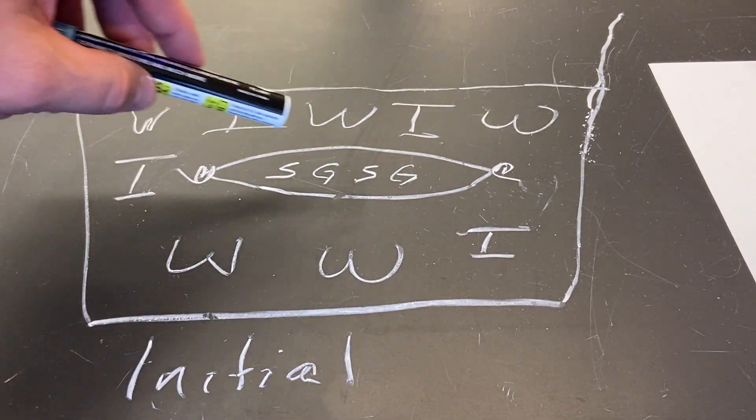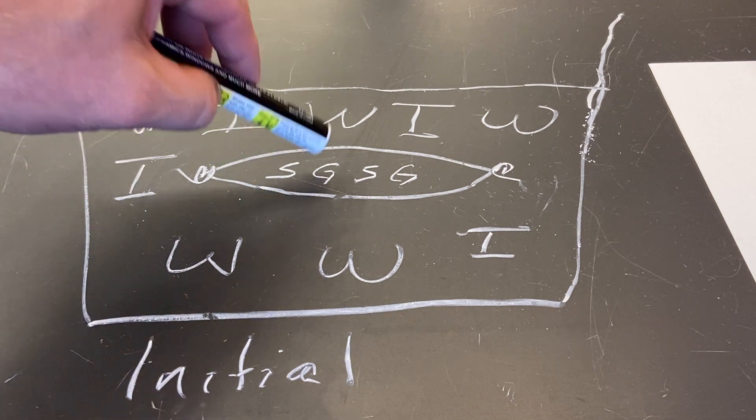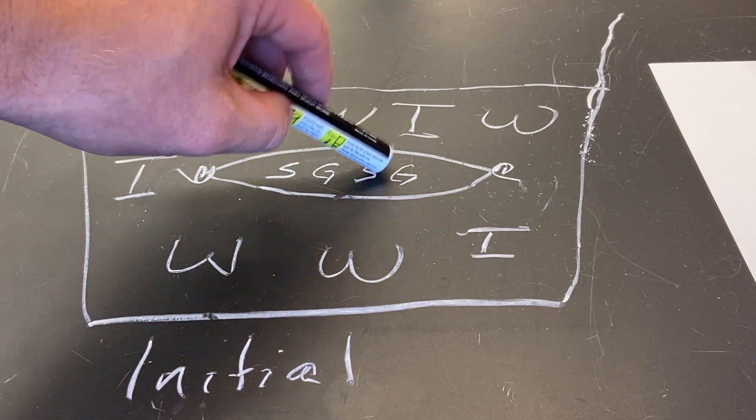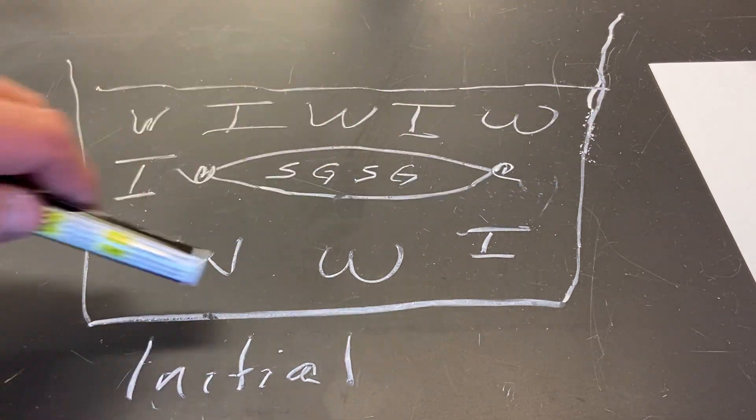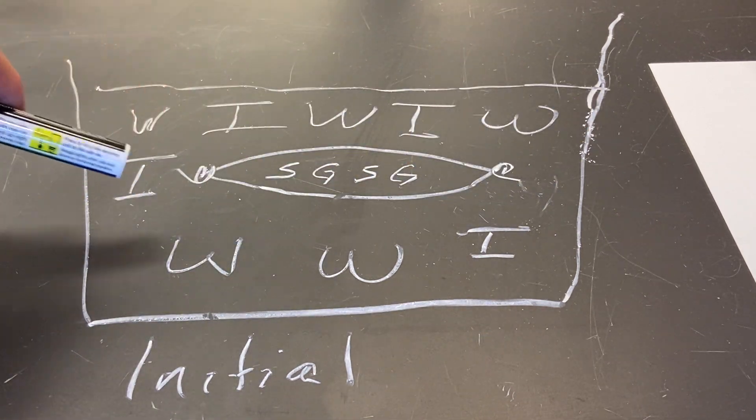So to recap, within our cell we had glucose and starch. That's all we put into that cell. Into the beaker, or the cup, we put water and iodine. So that is our initial state.